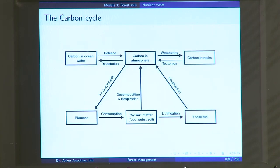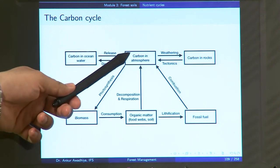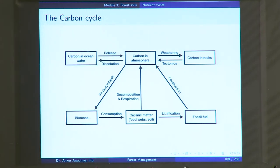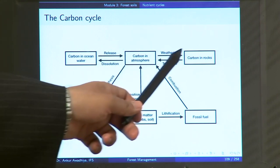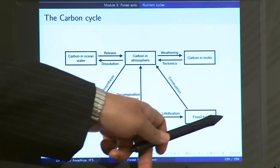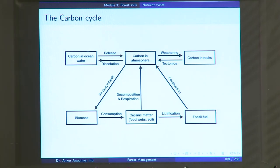Next we will have a look at the carbon cycle. Carbon has a number of reservoirs: carbon in the atmosphere in the form of carbon dioxide, carbon dissolved in ocean water in the form of carbonic acid, carbon in rocks primarily in the form of carbonates, carbon in the biomass of different organisms, and carbon in the form of fossil fuels such as coal and petroleum. All of these pools interact with each other.